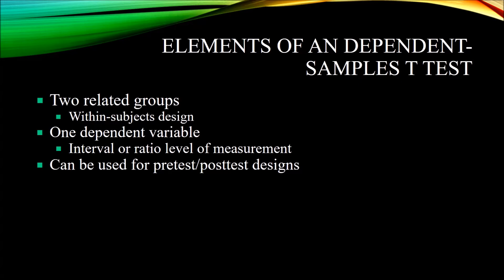Before we administer the treatment, we test the anxiety levels of all 50 participants using the same measurement instrument. Then we administer REBT to all the participants for 12 weeks. After those 12 weeks have passed, we administer that same anxiety inventory again for all 50 participants. That's referred to as a within-subjects design, and that's what you have to have for a paired samples t-test — you have to have two related groups. So the anxiety scores on the post-test are related to the anxiety scores given at the beginning, the pre-test.